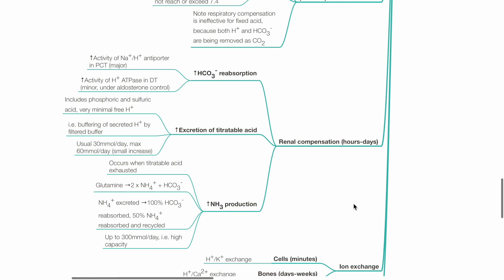Increased NH3 production occurs when titratable acid is exhausted. Glutamine is converted to 2 NH4 ions and bicarbonate ion. NH4 is excreted. 100% of bicarbonate ion is reabsorbed. 50% of NH4 ions are reabsorbed and recycled. Production of ammonium ions can be up to 300 mmol per day—i.e., this system is high capacity.